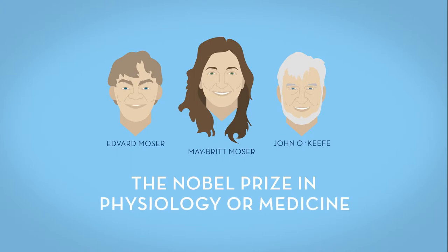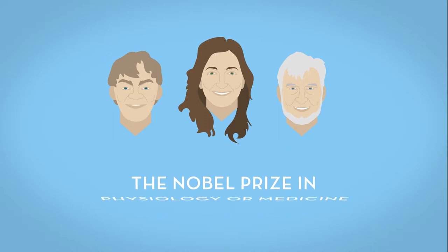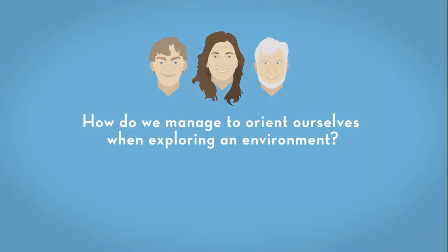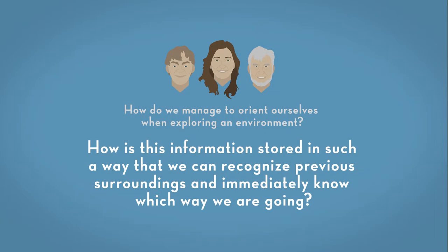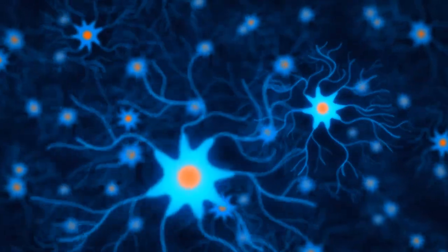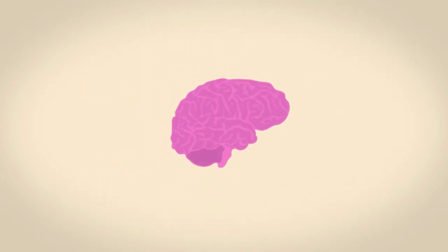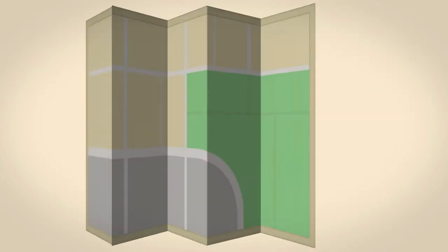They have solved a mystery that has engaged philosophers and scientists for centuries. How do we manage to orient ourselves when exploring an environment? And how is this information stored in such a way that we can recognize previous surroundings and immediately know which way we are going? In short, they have identified specialized nerve cells in the brain that together form interconnected networks, creating a mental map that allows us to find our way from one place to another.